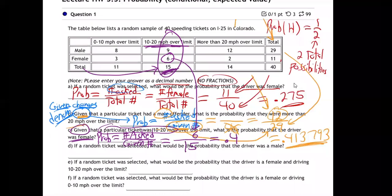So the given — you start with the given and put that in the denominator. We're given it was 10 to 20 over the limit, so that's 15 total of those. Put that in the denominator. And then out of those, what's the chance it was a female? What you're given is what you know for sure — that's the group it must have come out of. Six out of 15.